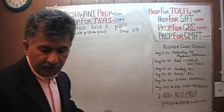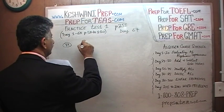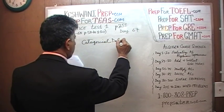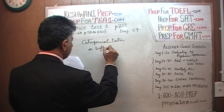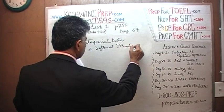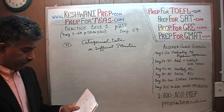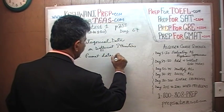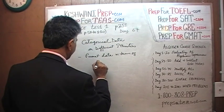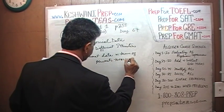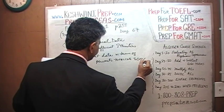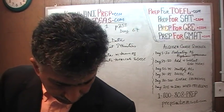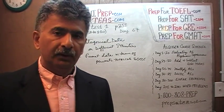In number 19 we are told that we have categorical data on different ethnicities, and to present the data in terms of percentage we have to present it totaling 100% obviously. The question is which tool do we use — the pie chart, the line graph, the histogram, or the scatter plot?